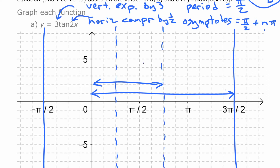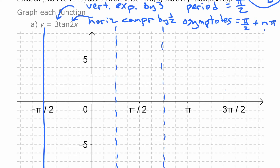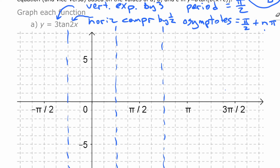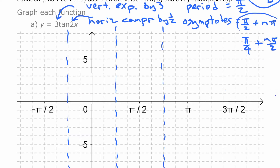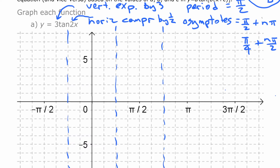So instead of having eight squares between asymptotes on the grid, we're going to have only four squares between them. The new asymptotes are at pi over 4 plus multiples of pi over 2 — multiples of the period apart. A quick way to find this without thinking it through on the grid: just divide each term in the original expression by 2. Dividing pi over 2 by 2 gives pi over 4, and dividing n·pi by 2 gives n·pi over 2. That's where the new asymptotes are.